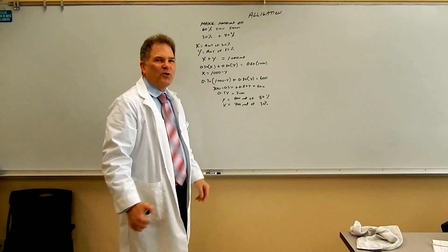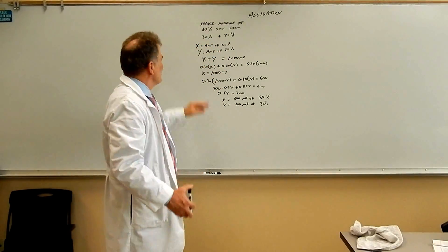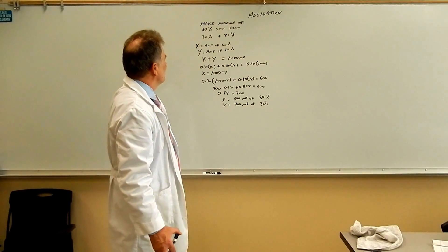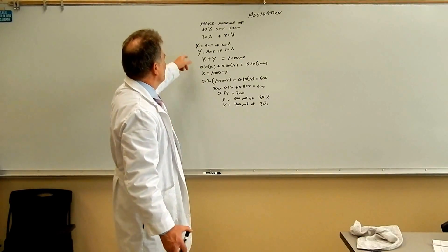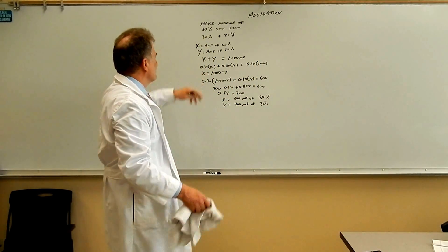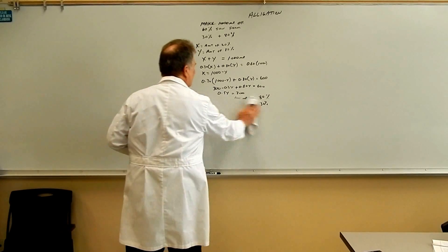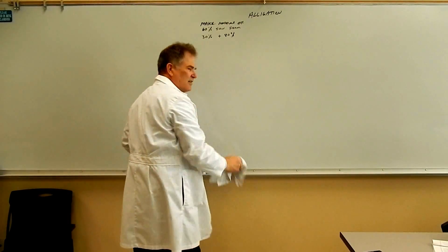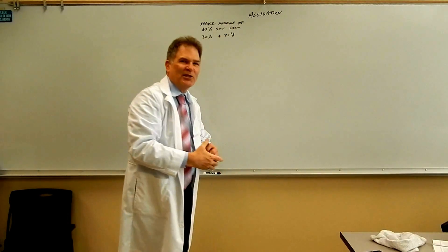For those of you that like to do algebra this is the way you would do it. You have two different unknowns, you need two formulas and blah blah blah. If you want to do it that way pause it and copy all that down but it's really too complicated to do that. There's a much easier way.